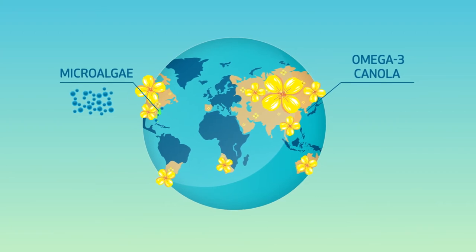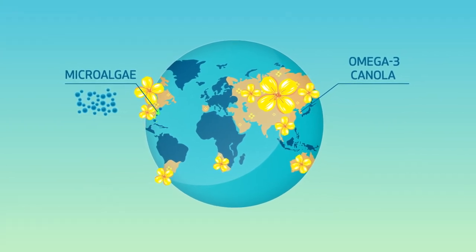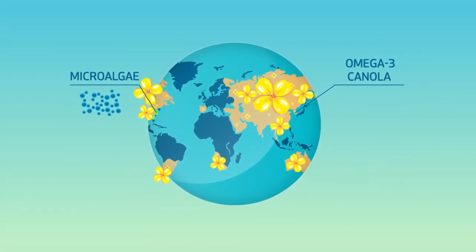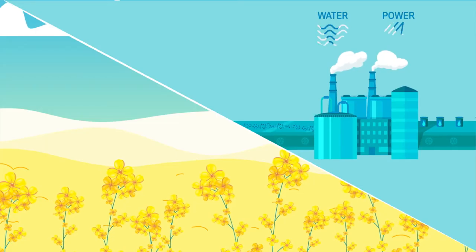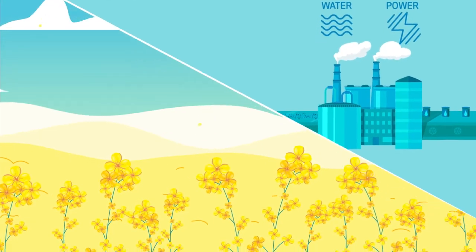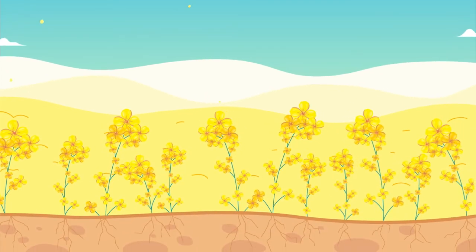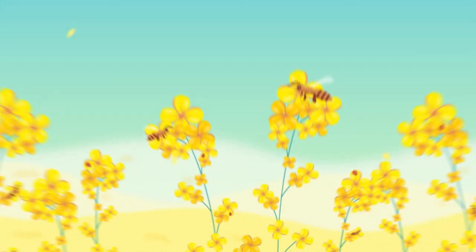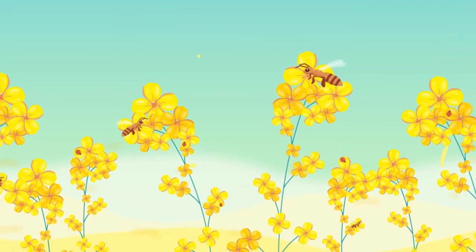Nutriterra can double the world's supply of DHA on less than 5% of available existing canola-producing land. Unlike algal oils, Nutriterra's source crop is raised on sunshine and rain, making it far less resource-intensive. Canola improves soil and provides habitats for pollinators.